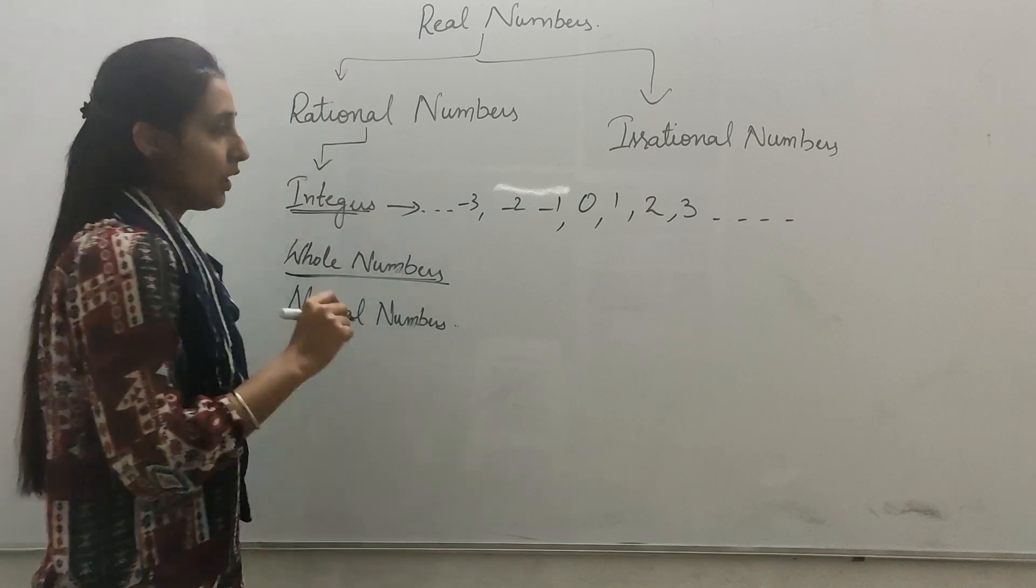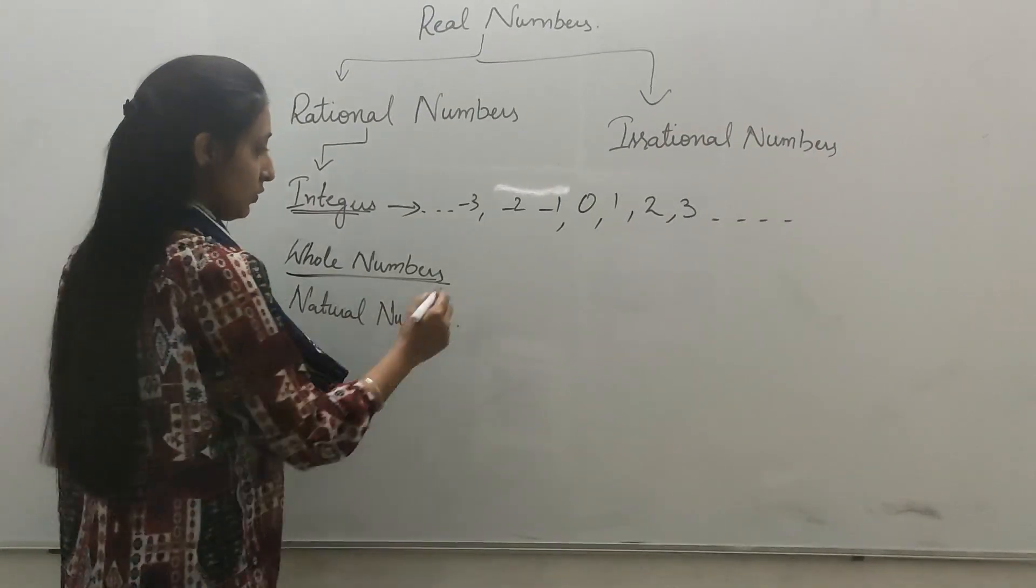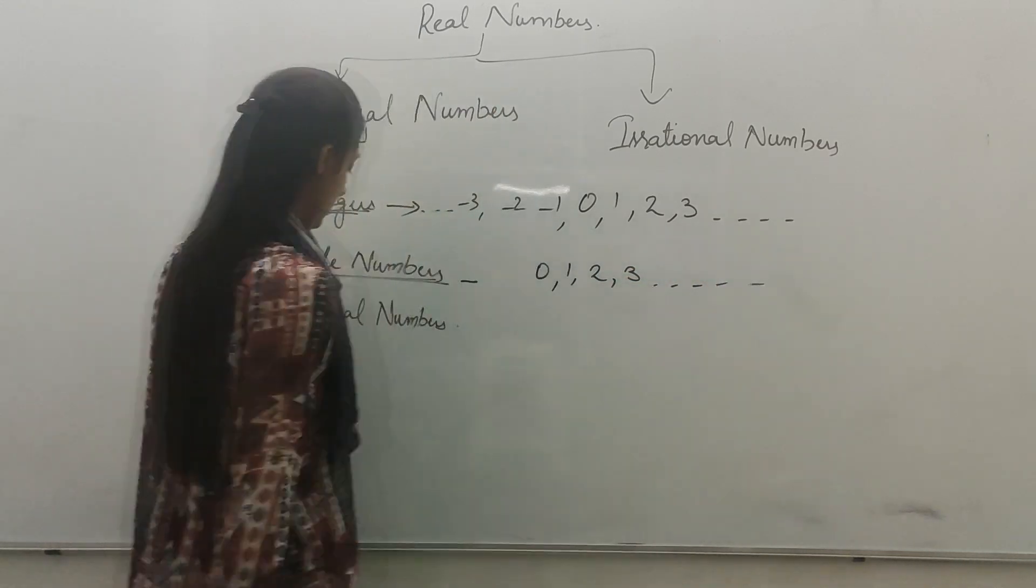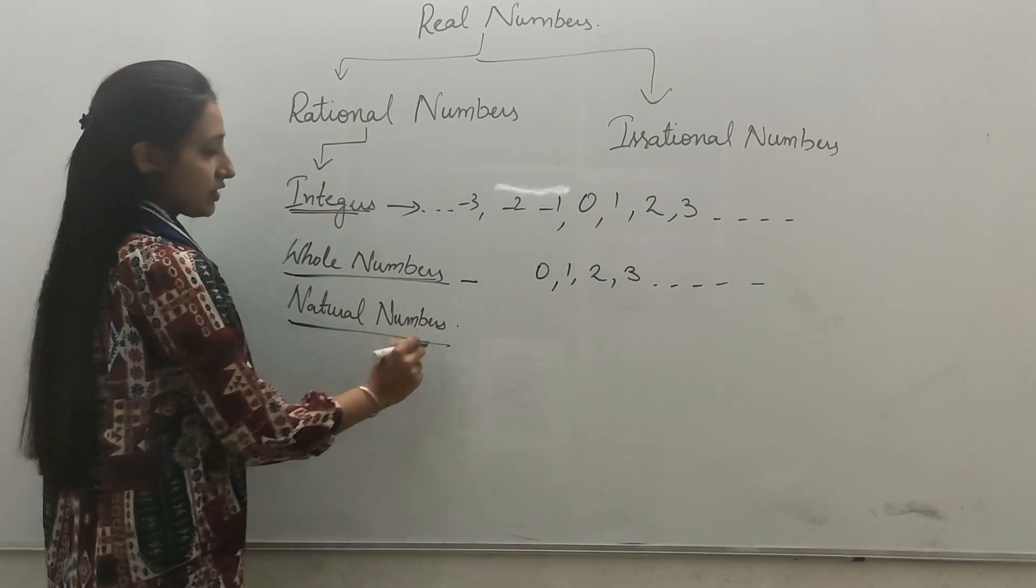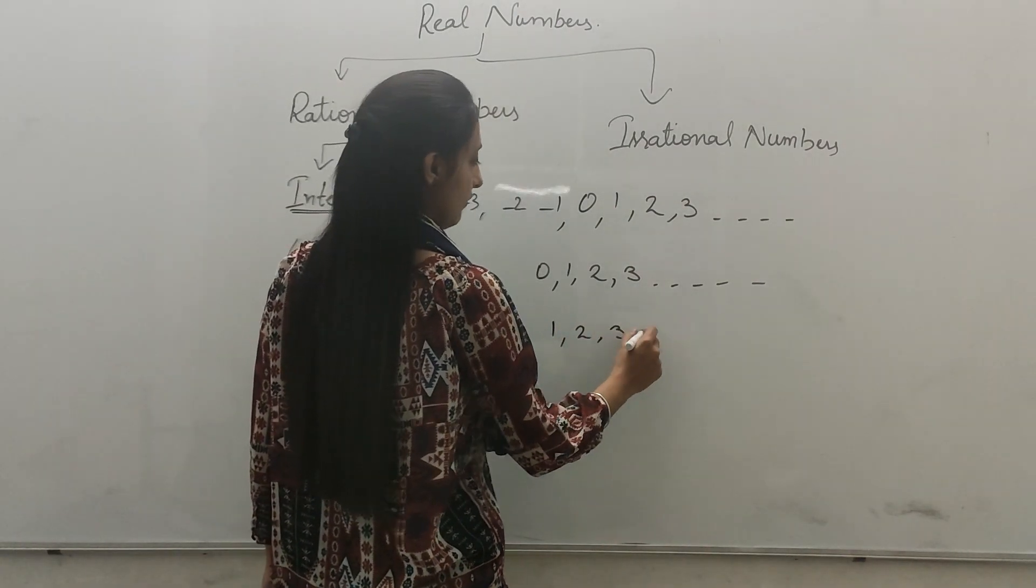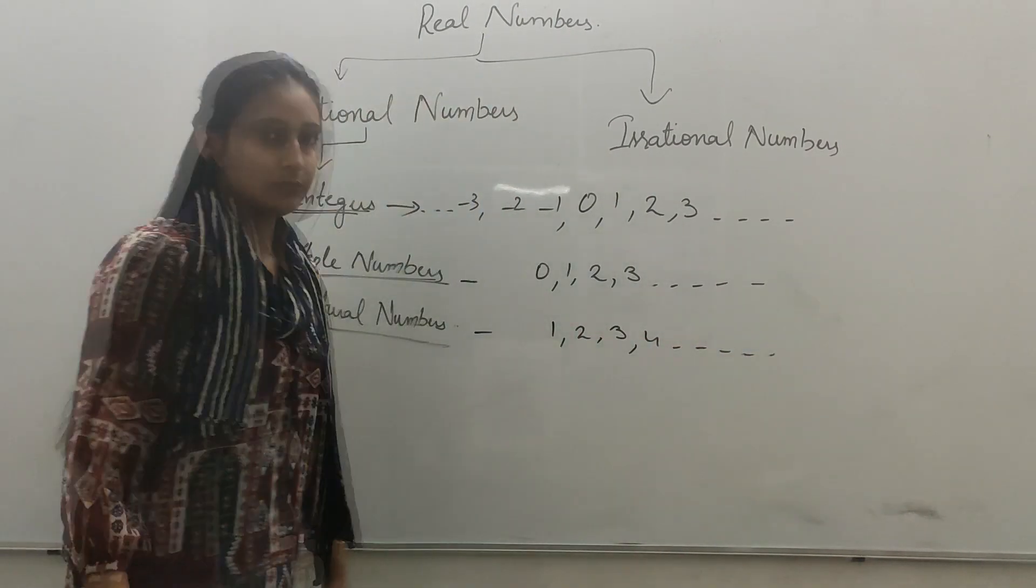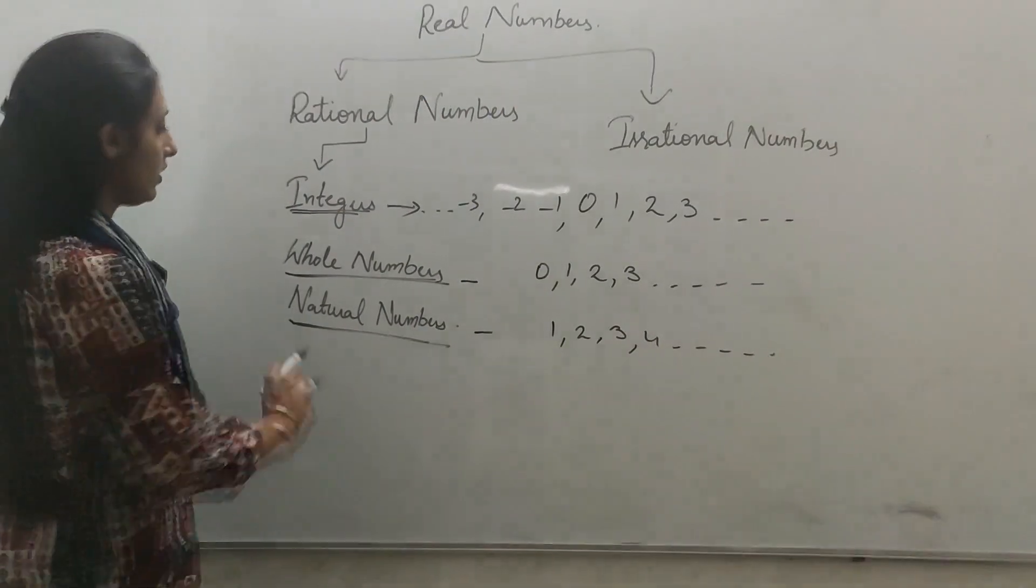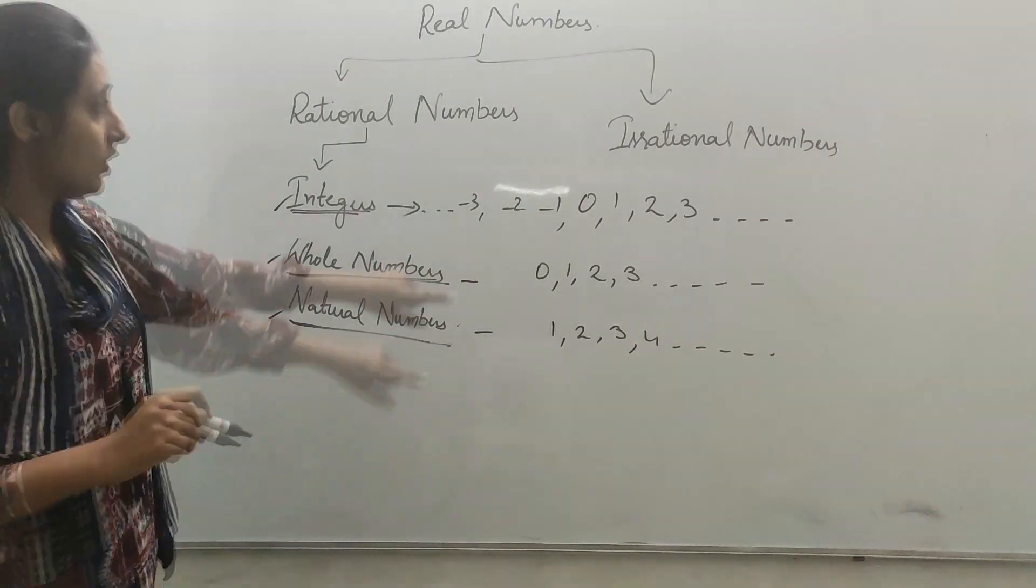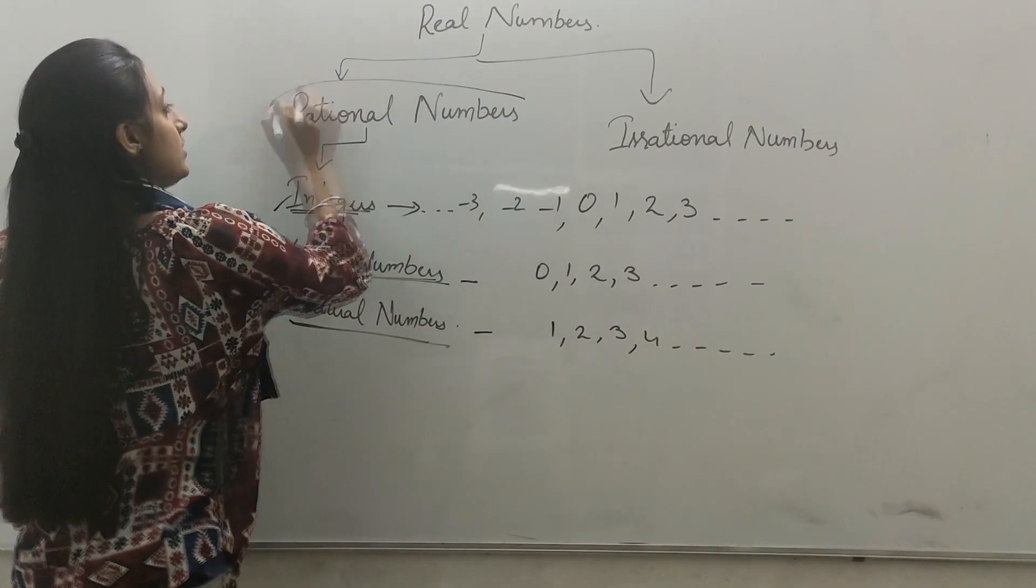Whole numbers are numbers which start from zero: zero, one, two, three and so on. Natural numbers are the numbers which start from one: one, two, three, four and so on. So in summary we can say integers, whole numbers and natural numbers all make rational numbers.